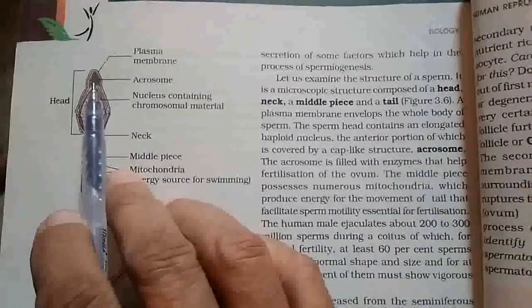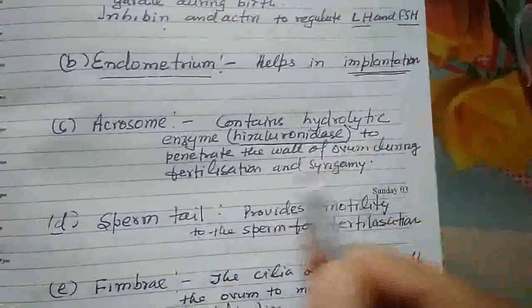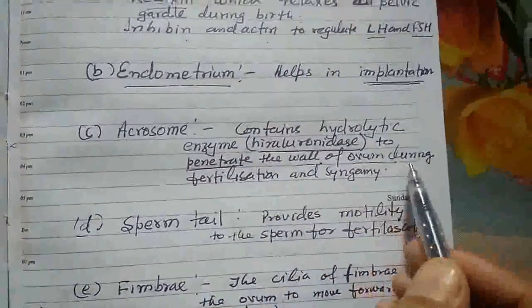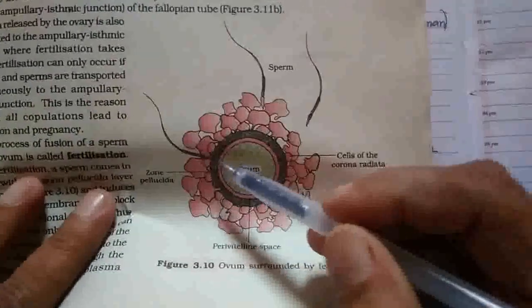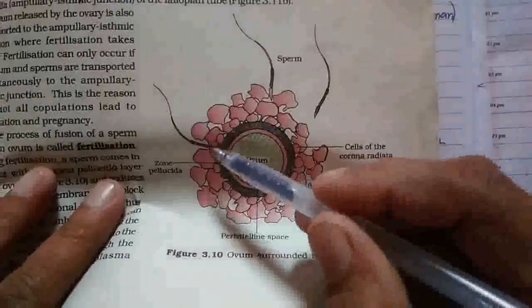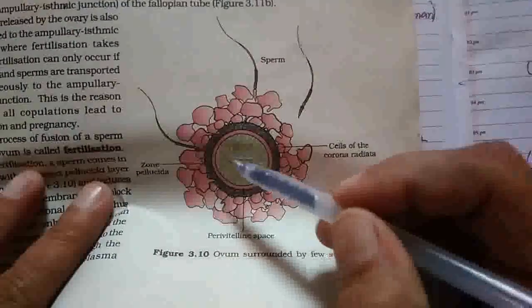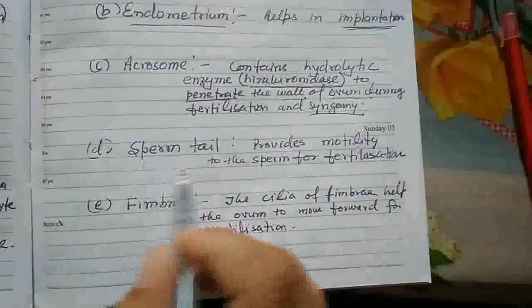Acrosome: it is a part of the human sperm. The acrosome contains the enzyme called hyaluronidase, which is used to penetrate the wall of the ovum during fertilization. This acrosome helps to dilate the wall of the ovum to allow entry of the male gamete's nucleus during fertilization.